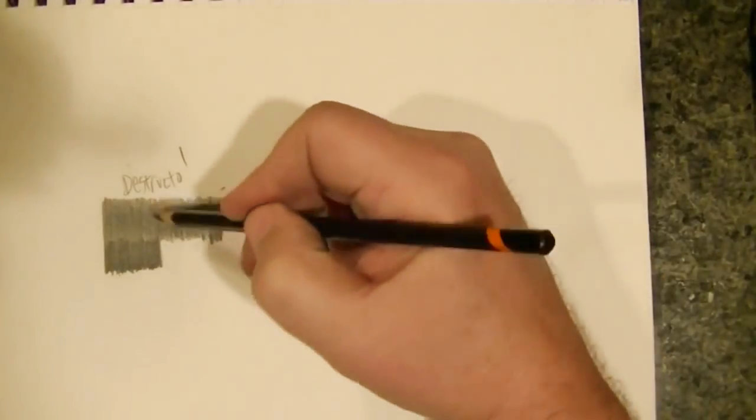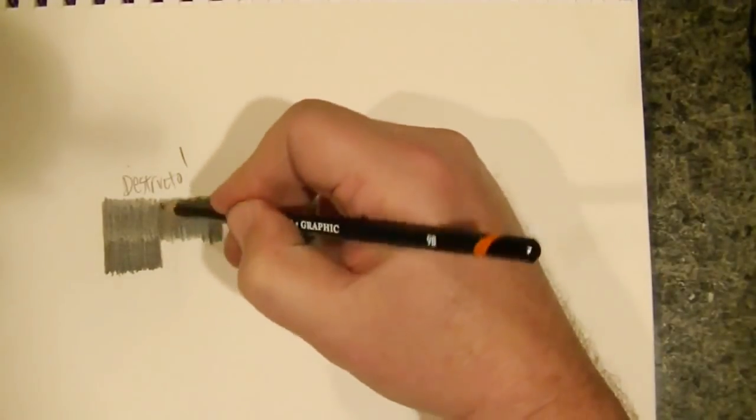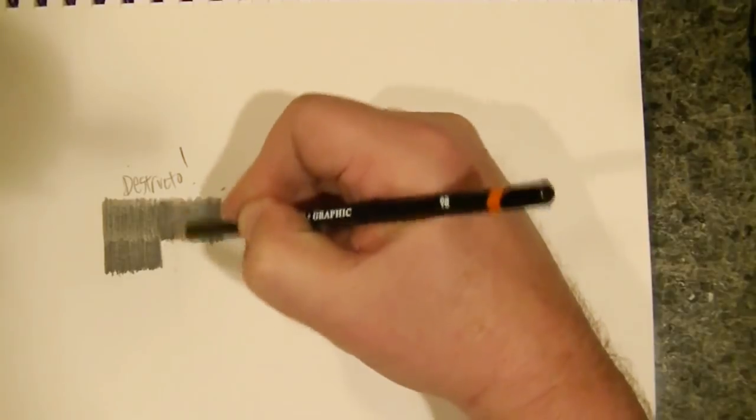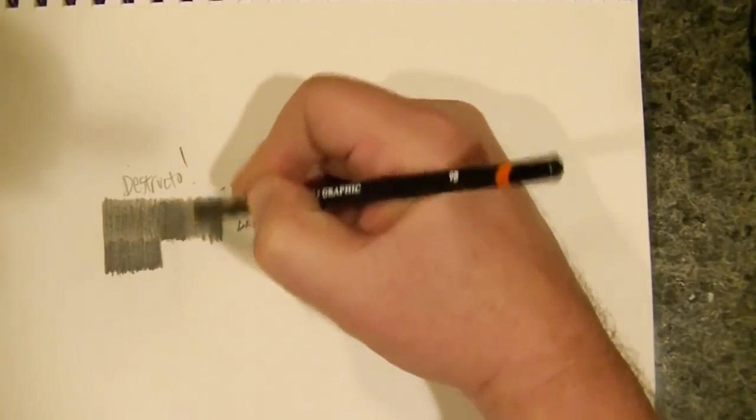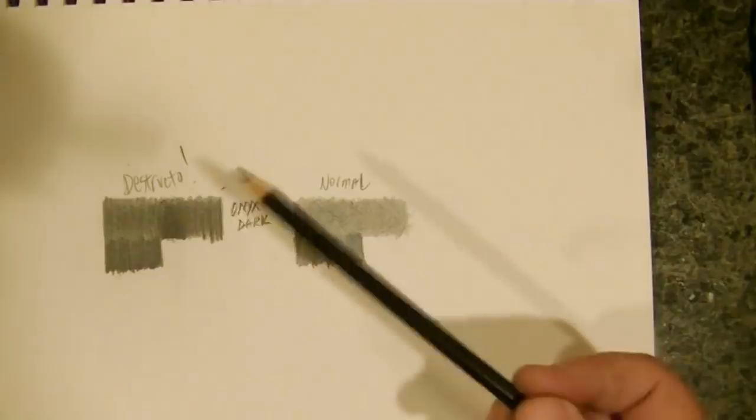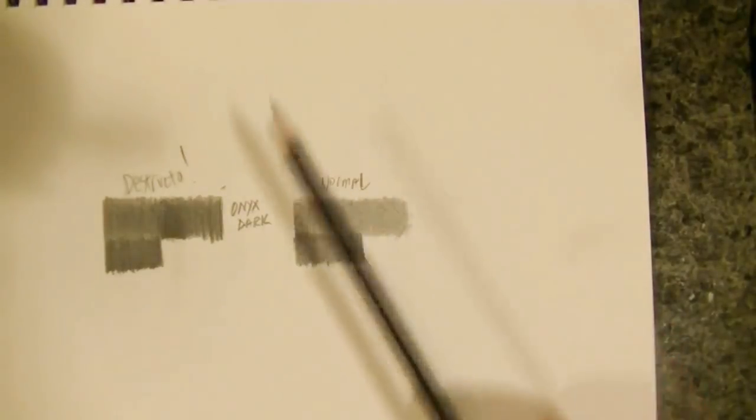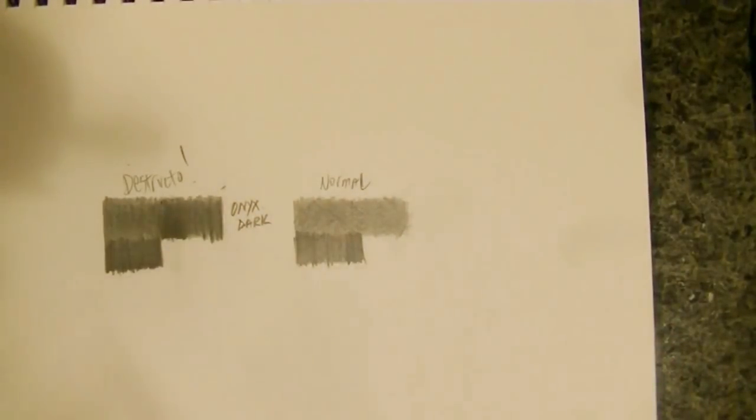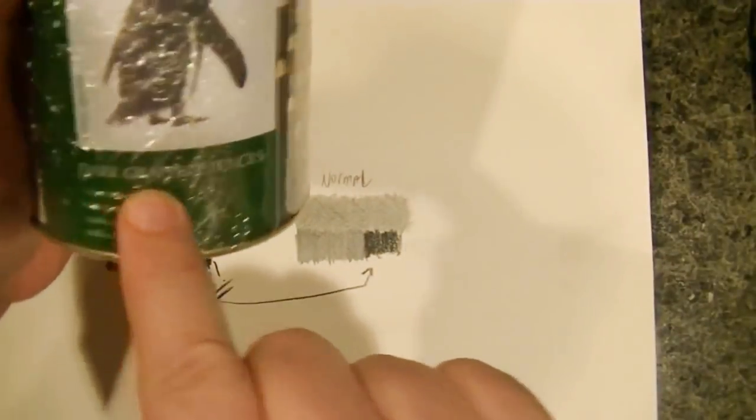That's a dark pencil. Now let me put that right on top of the Onyx dark. Who's your daddy? Even their 9B is darker than their Onyx dark. I don't know what those guys are talking about, but clearly the Onyx dark pencil is not what it is advertised. Dark graphite pencils, wrong.